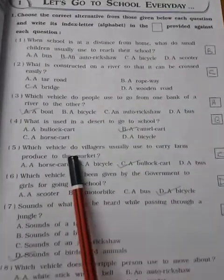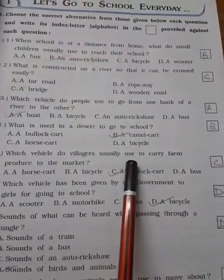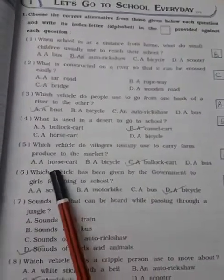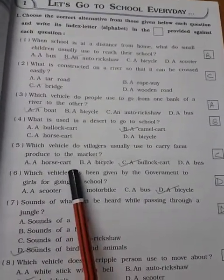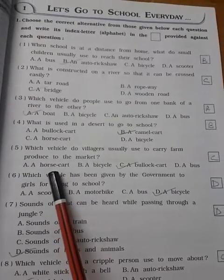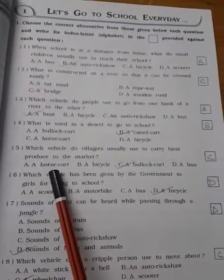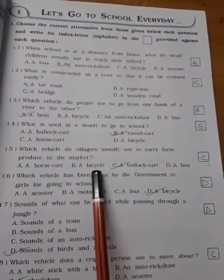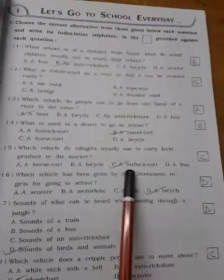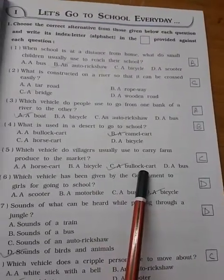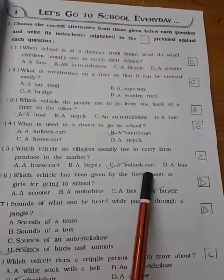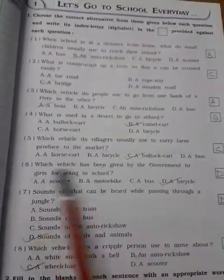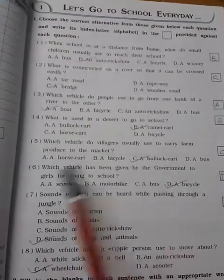Which vehicle do villagers use to carry farm products to the market? Horse cart is also right but every farmer does not have horses. A cycle? No, sometime it will not be possible in the village. A bullock cart? Yes, correct answer is bullock cart. A bus? The answer is wrong. Answer will be bullock cart.